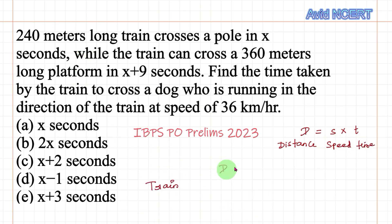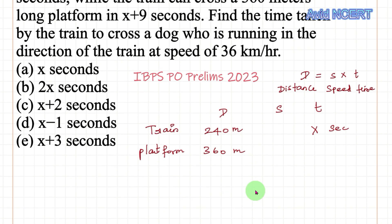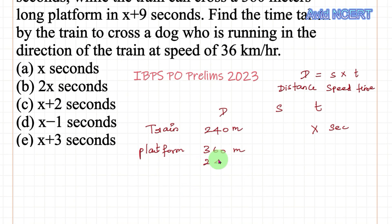For the train, distance is 240 meters and the time taken is x seconds. For the platform crossing, the distance is 360 meters, but when crossing a platform the train length must also be taken into consideration. So the total distance is 360 plus 240, which is 600 meters, and the time taken is x plus 9 seconds.